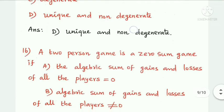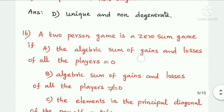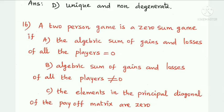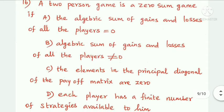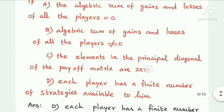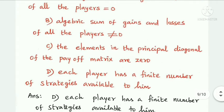Next question: a two-person game is a zero-sum game if — the algebraic sum of gains and losses of all players is equal to zero, the algebraic sum of gains and losses is not equal to zero, the elements in the principal diagonal of the payoff matrix are zero, or each player has a finite number of strategies available. Option D is the answer: each player has a finite number of strategies available to him.